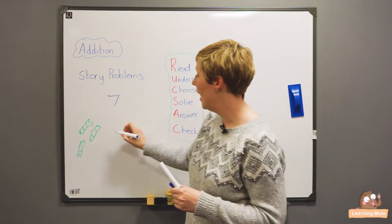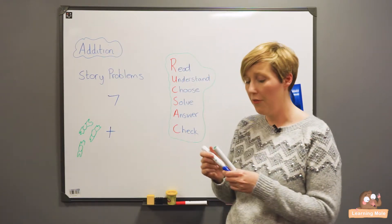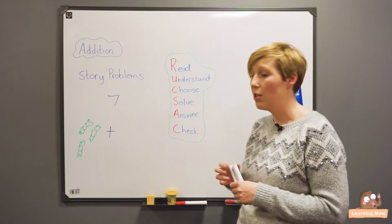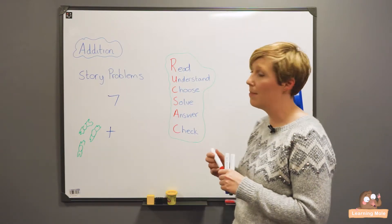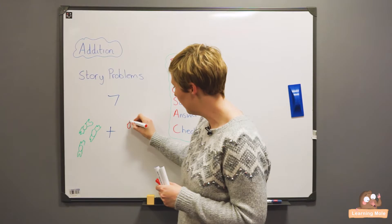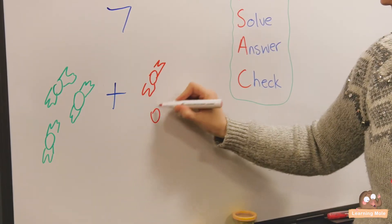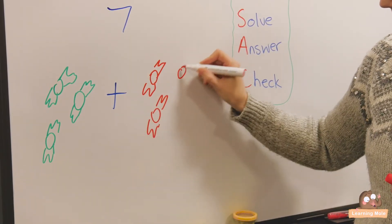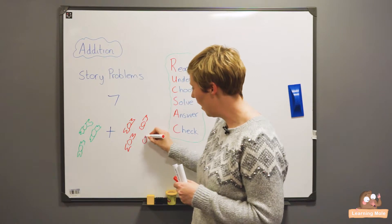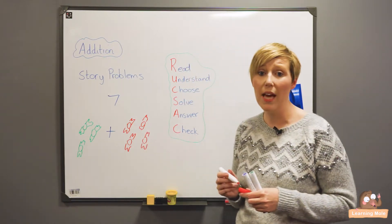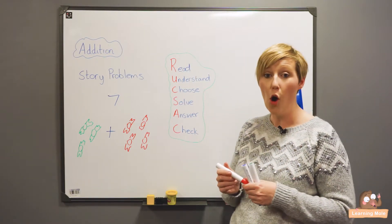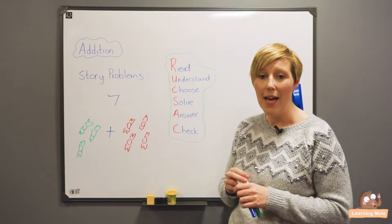And then they might say, I've got three sweets and my granny takes me to the shop and she buys me four more sweets. So here's my four more sweets. How many sweets do I have altogether? And it can be as simple as that or as complicated as they like.